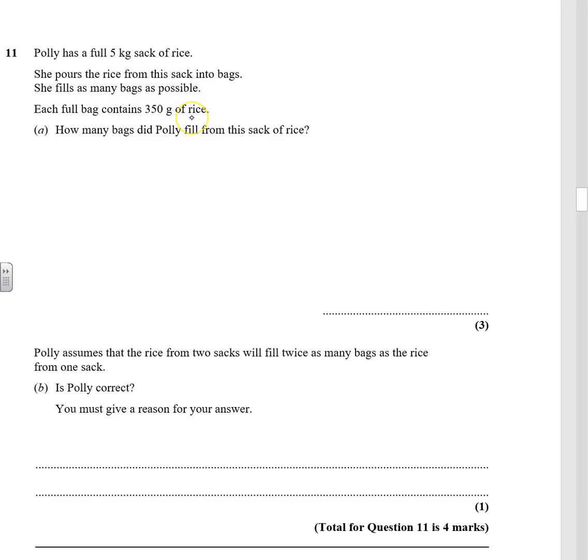How many bags did Polly fill from the sack of rice? Well, we've got different units here. We've got kilograms and grams. So let's change this into grams. And we know there's a thousand, so that is 5,000 grams.